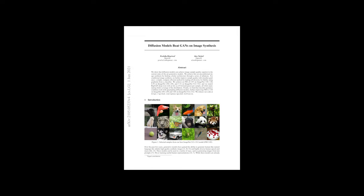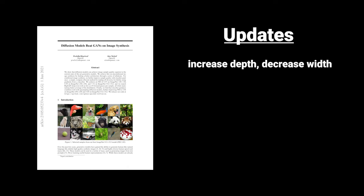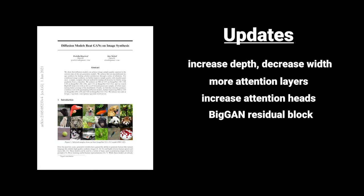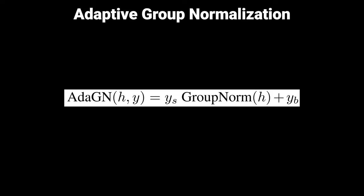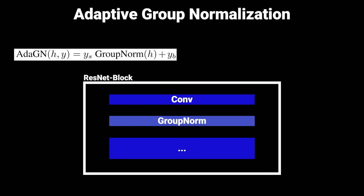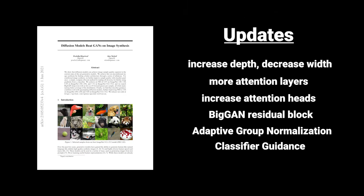In the second paper from OpenAI, they heavily improved the overall outcome by improving the architecture. They increased the depth of the network and decreased the width, included more attention blocks, and increased the number of attention heads. They also took the residual blocks from BigGAN for the upsampling and downsampling blocks. They proposed adaptive group normalization — incorporating the time step and additionally the class label: applying group norm after the first convolution in each ResNet block, multiplying by a linear projection of the time step, and adding a linear projection of the class label. The last improvement is classifier guidance, which uses a separate classifier to help the diffusion model generate a certain class — this is a topic on its own and will be covered in another video.